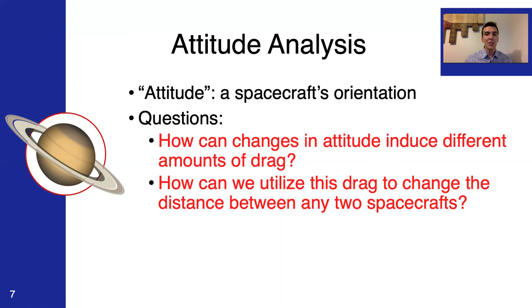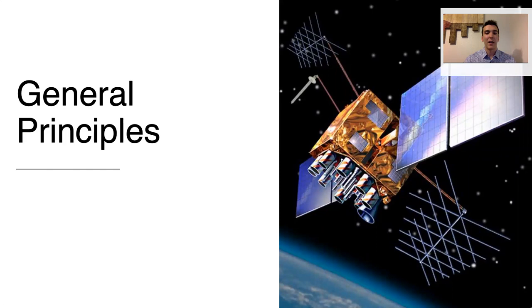And I was also asked, how can we utilize this drag to change the distance between two spacecrafts in a string of pearls formation? Specifically, when the satellite constellation is initially launched, all of the satellites are going to exist in roughly the same point in space in their orbit. So, how do we use drag to space them out to achieve their string of pearls formation? This leads us into the general principles that will guide us to developing the algorithm that I ultimately came up with to solve this problem.